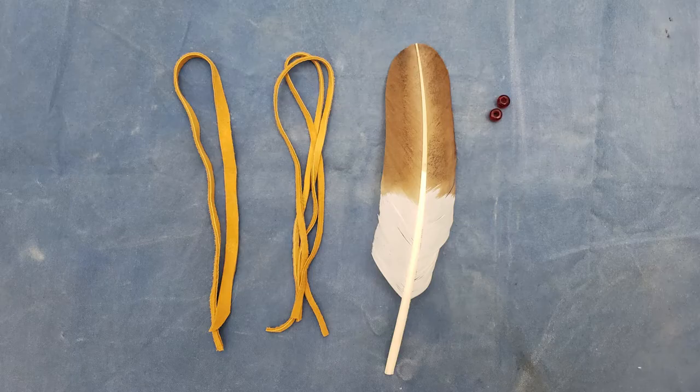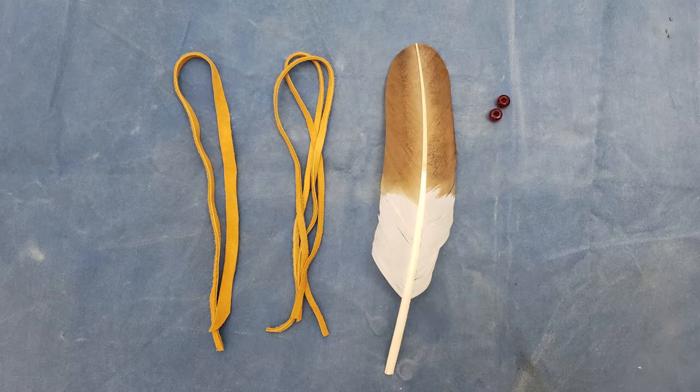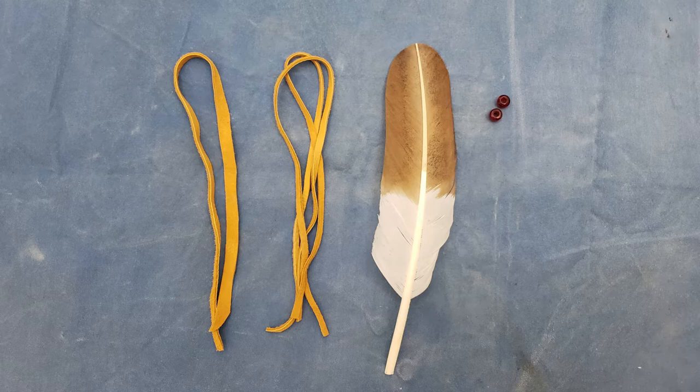Each kit includes one feather that has been hand-painted to look like a golden eagle feather, two thin strips of deer hide leather that will be used as the ties, one wider strip of deer hide leather that will be used to wrap around the quill of the feather, and two glass beads that will be used for decorating the finished spirit feather.